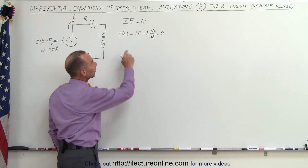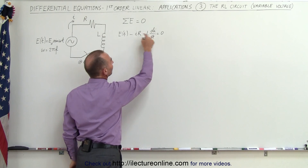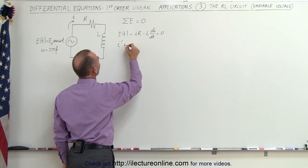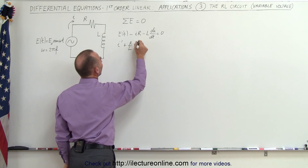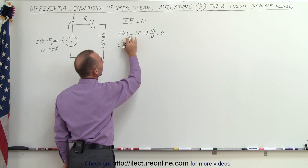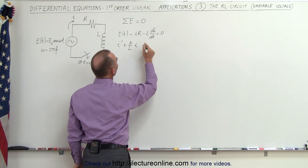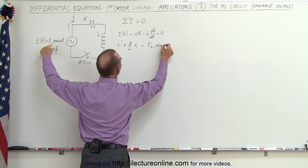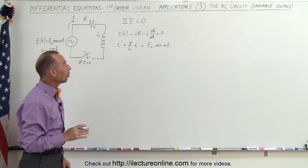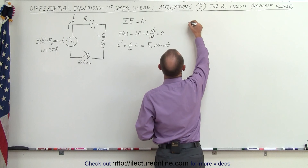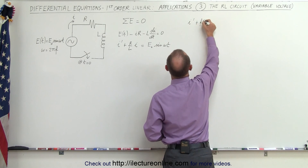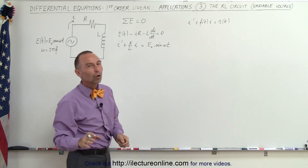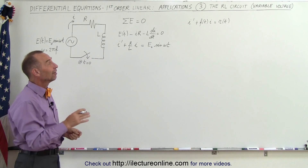Rearranging the equation by multiplying both sides by negative one, moving terms to the other side, and dividing everything by L, with di/dt written as I prime, we can write this as I prime plus R over L times I equals E as a function of time, which is E sub-naught times the sine of omega t. This is the differential equation to solve, in the general format of a linear, non-homogeneous, first-order differential equation.